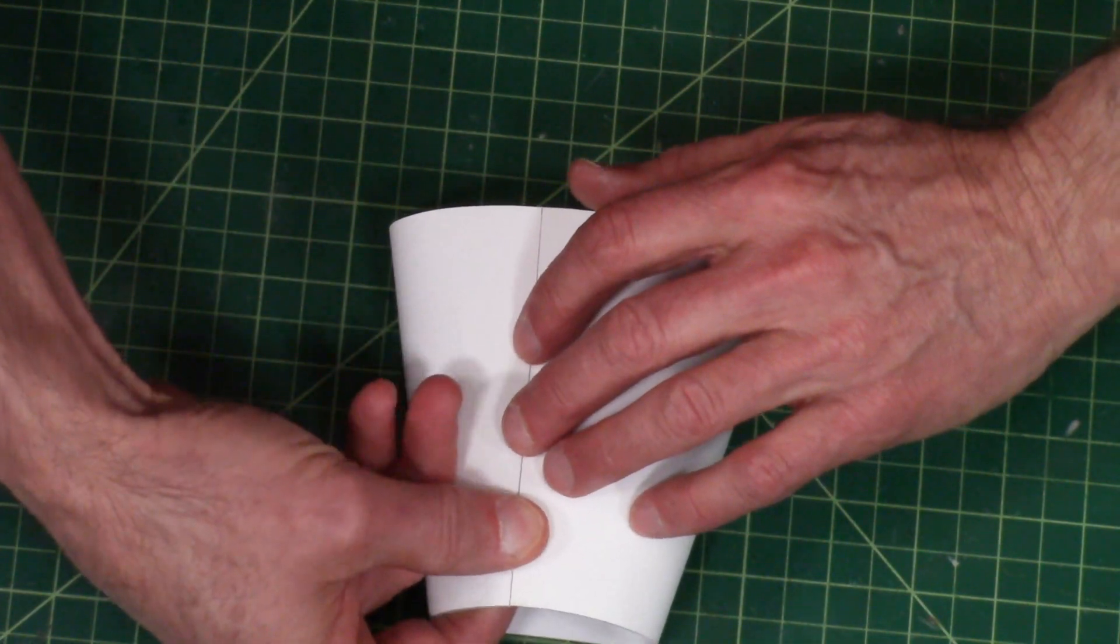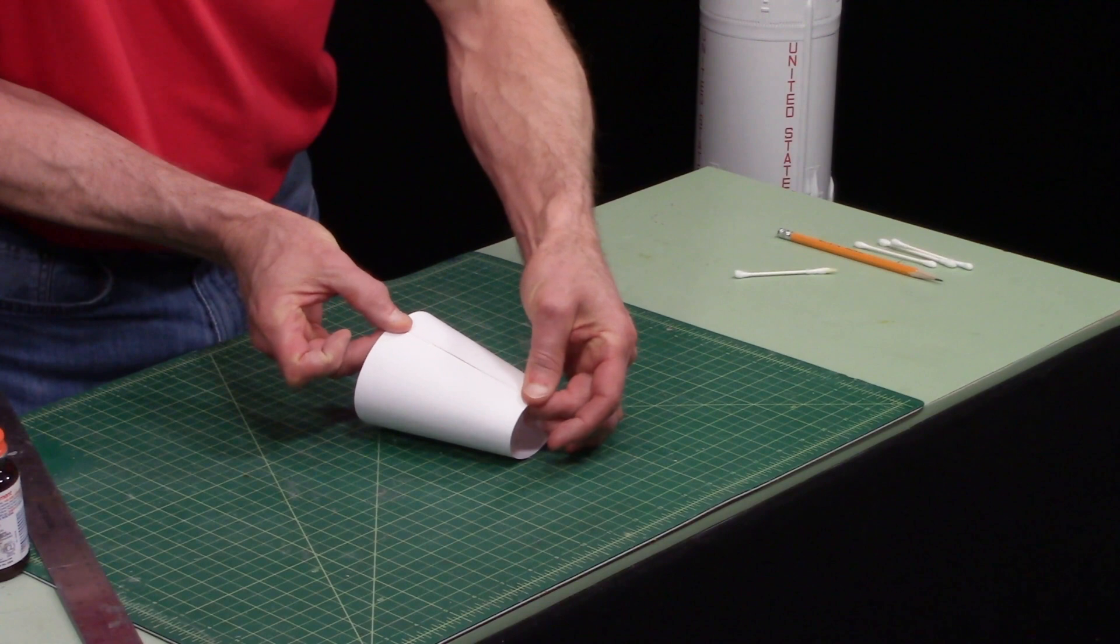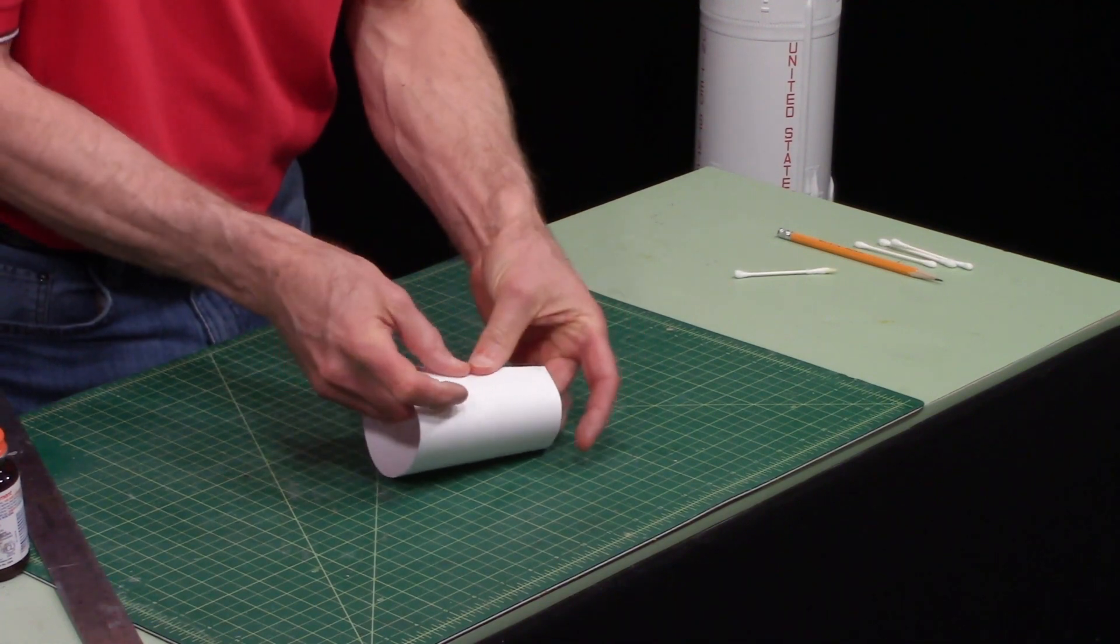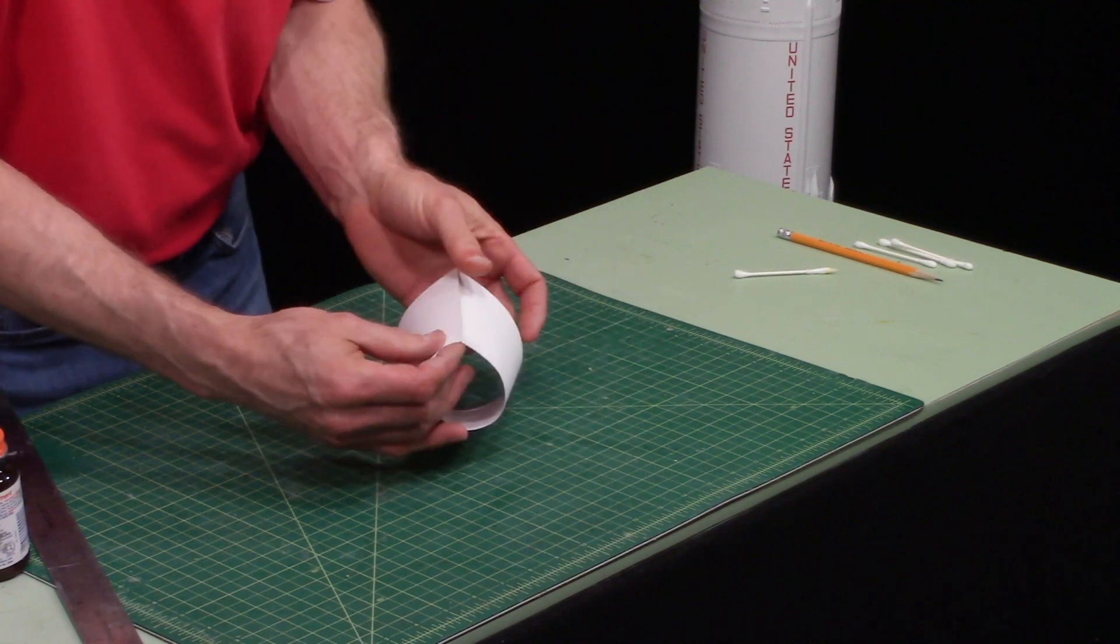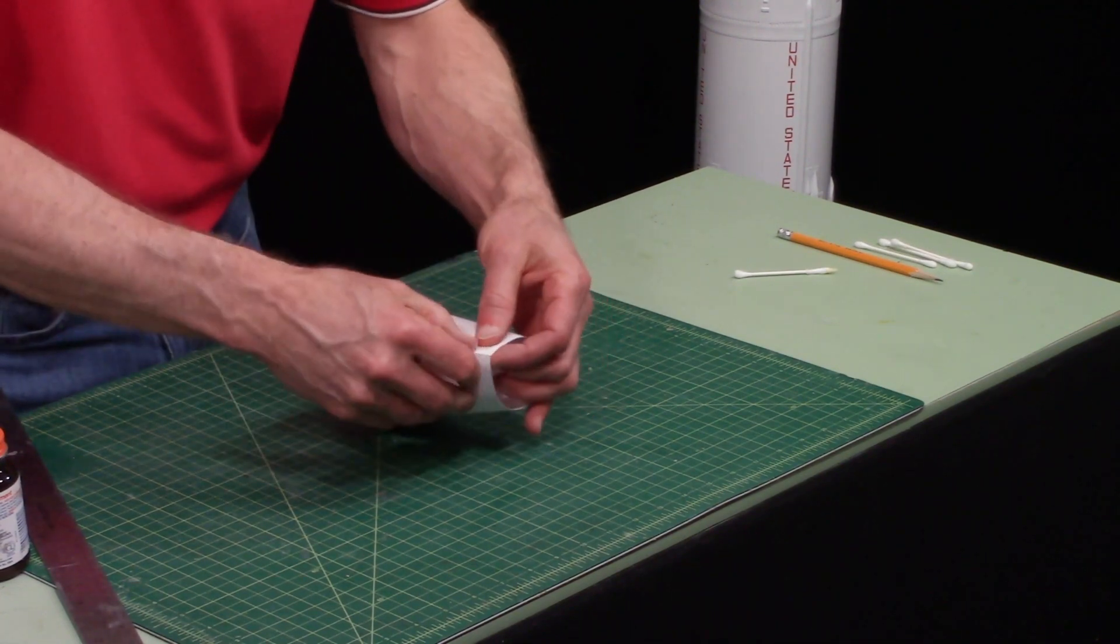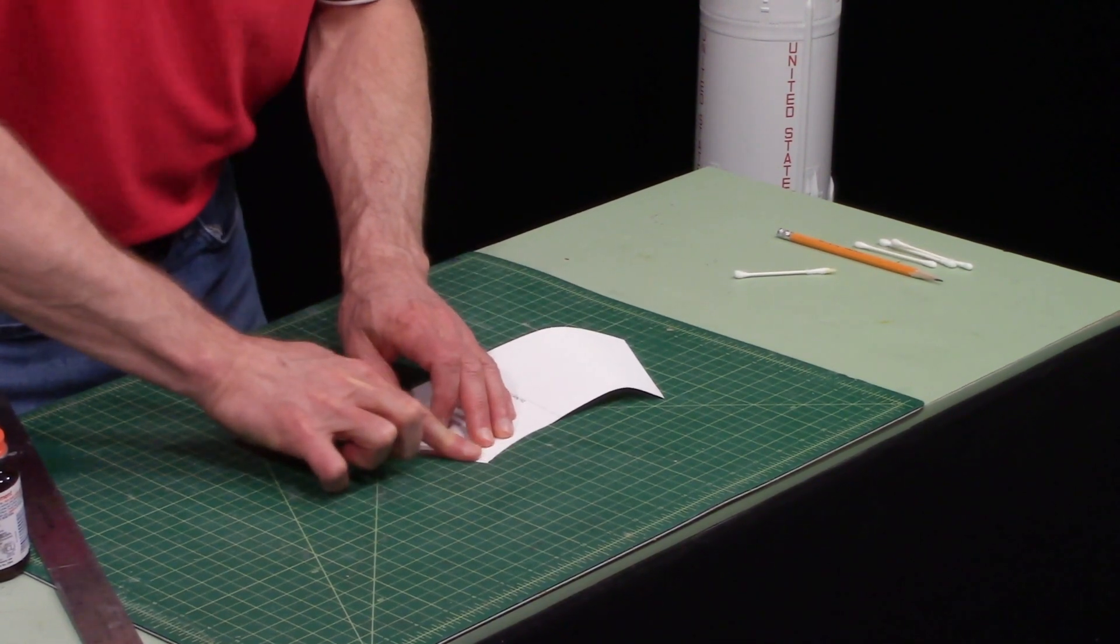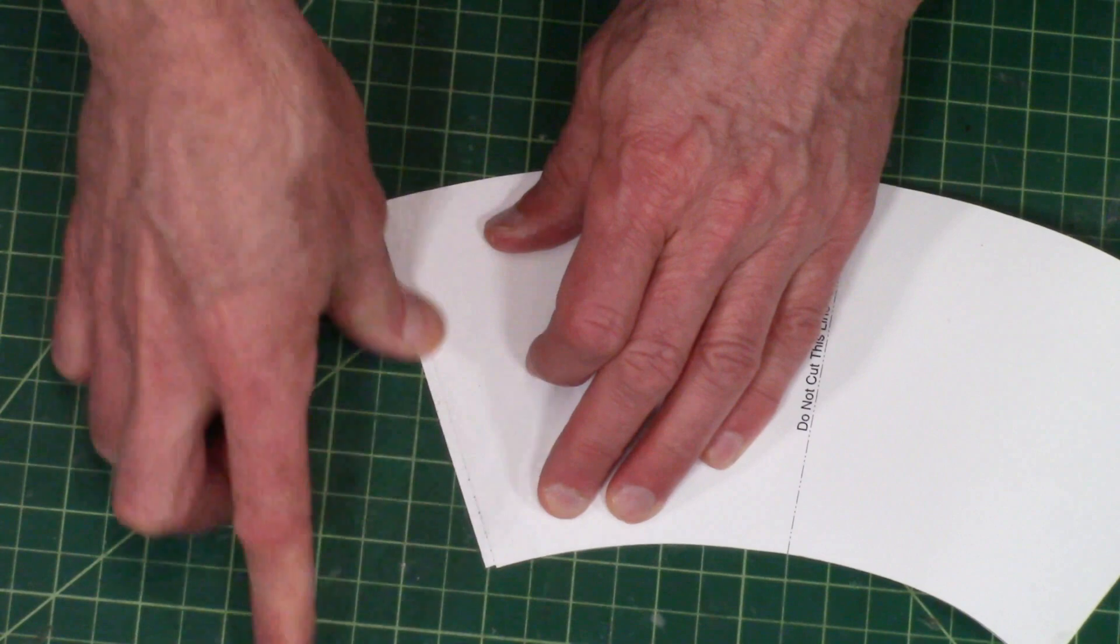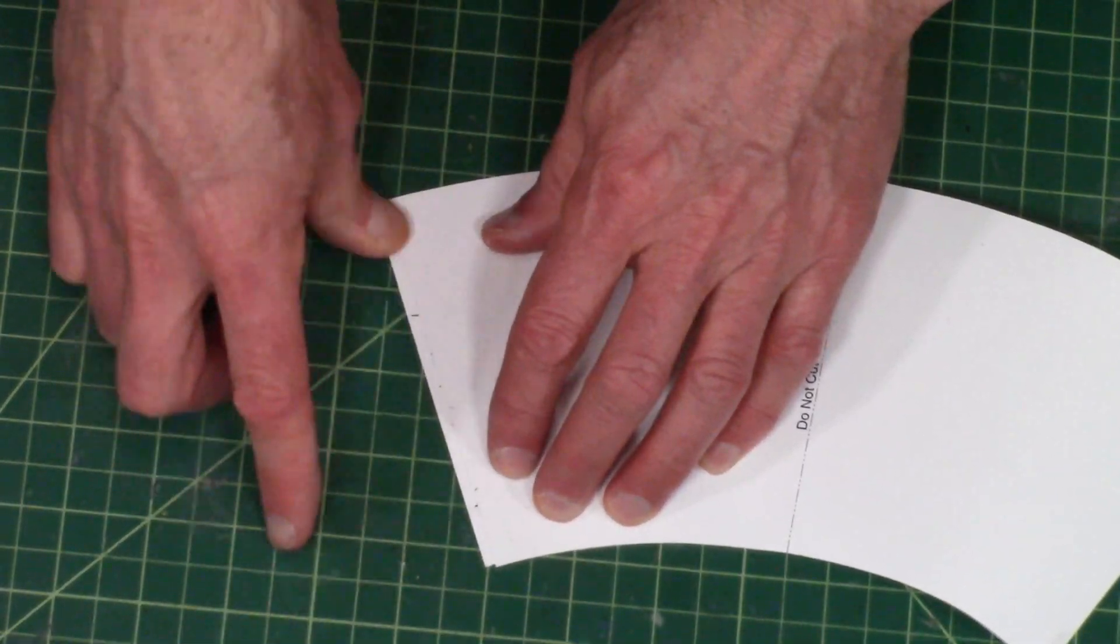And it's not sticking well, which means I didn't get enough rubber cement down there. So I'm going to peel it up, take all the old stuff off, and then reapply it so that it sticks good.